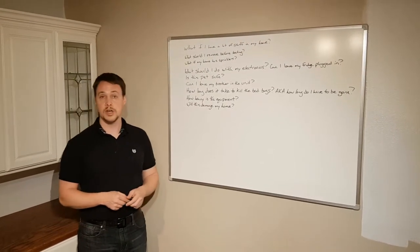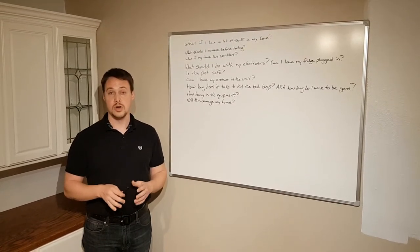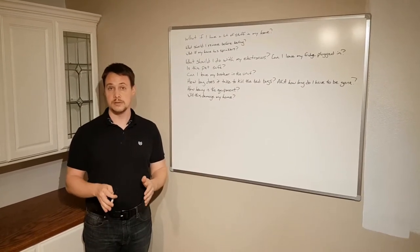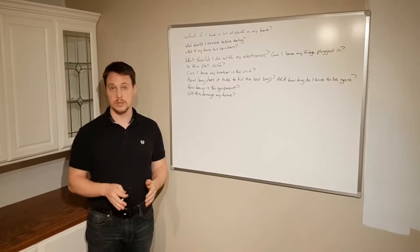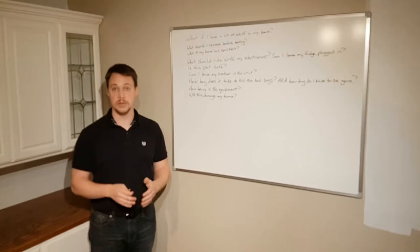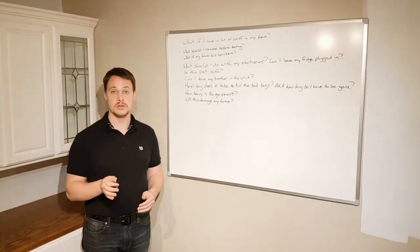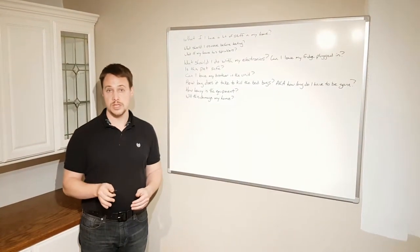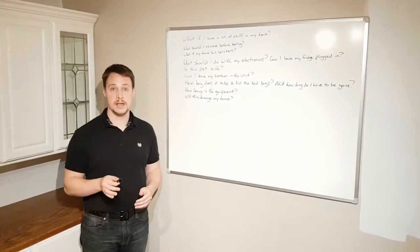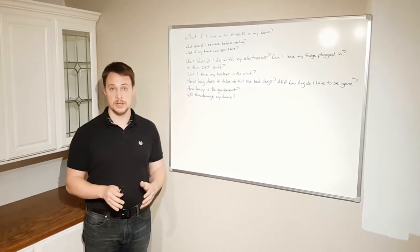Question three. What if my home has sprinklers? Very good question. Don't run the system if you have active sprinklers. You will almost definitely set them off and it's going to flood out your house. You need, if you have sprinklers, you need to make sure that they're disabled before you heat your unit. If you can't have them disabled, don't use the system. It's going to set them off.